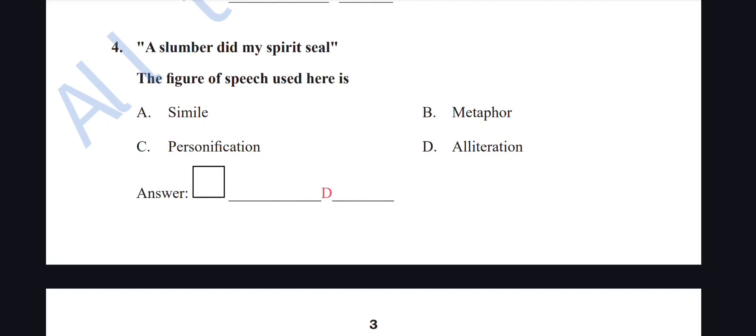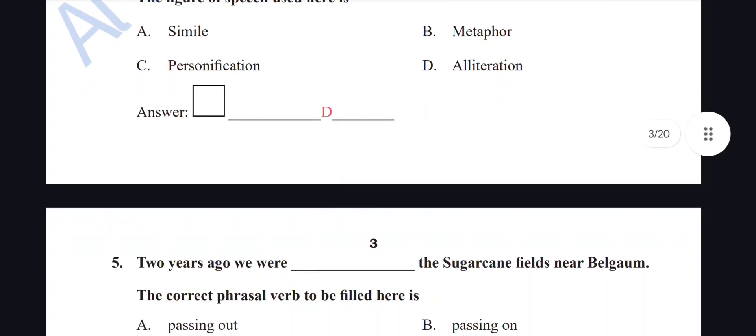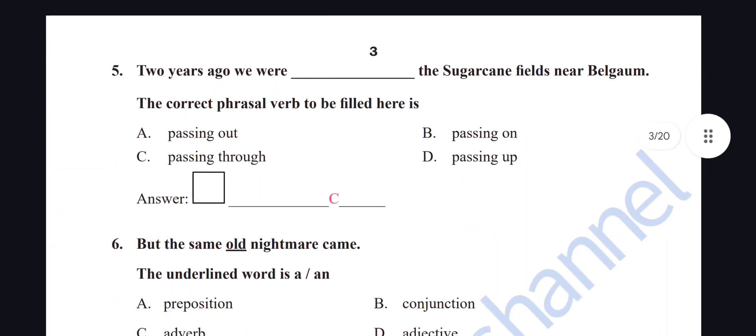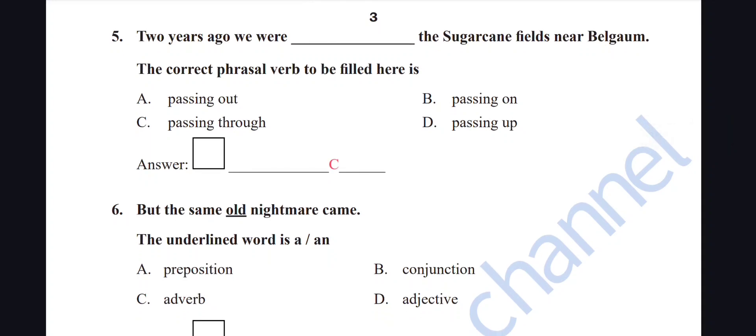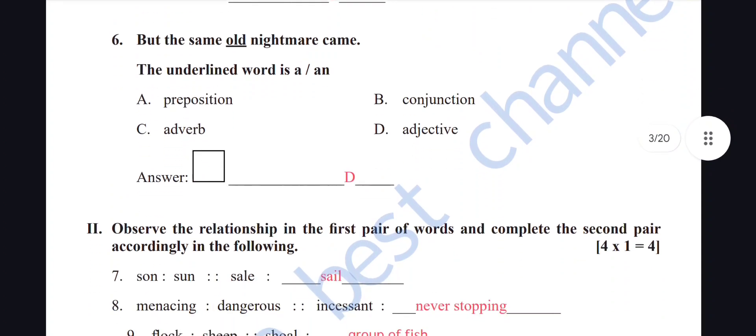For the phrasal verb question: 'Two years ago we were dash the sugar cane fields near Belgaum.' Passing out — no; passing on — no; passing through — yes; passing up — no. So option C: 'Two years ago we were passing through the sugar cane fields near Belgaum' is the right answer.